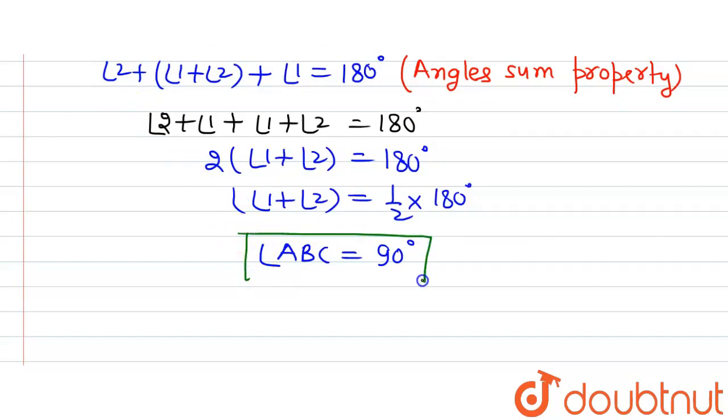So we have proved that angle ABC is a right angle, which is what we were required to prove in the question. That's all, thank you.